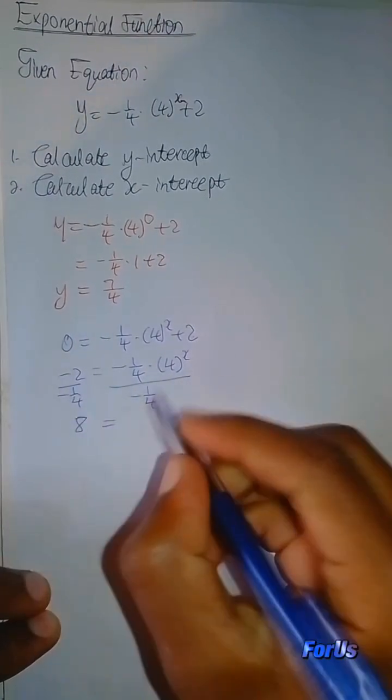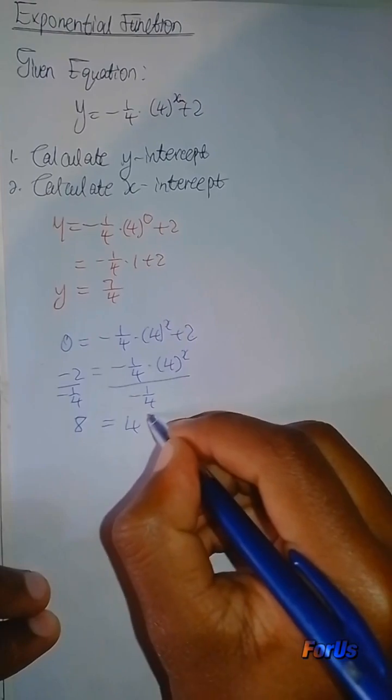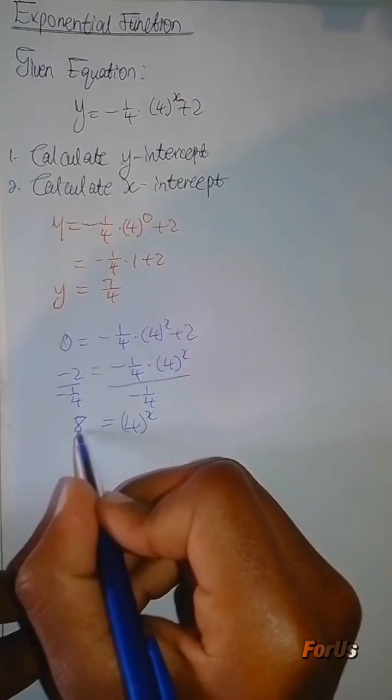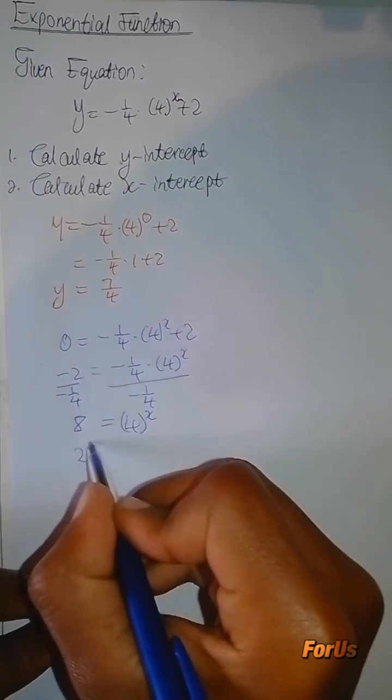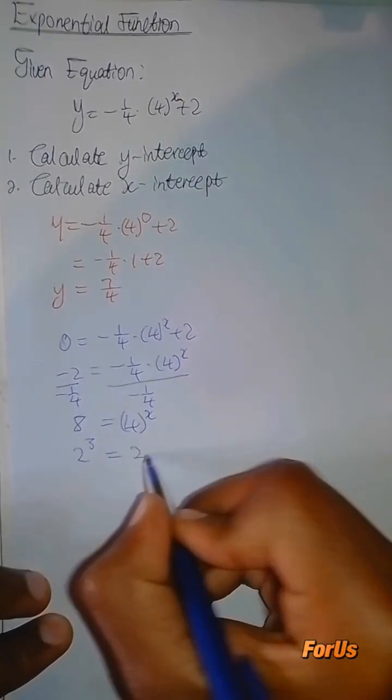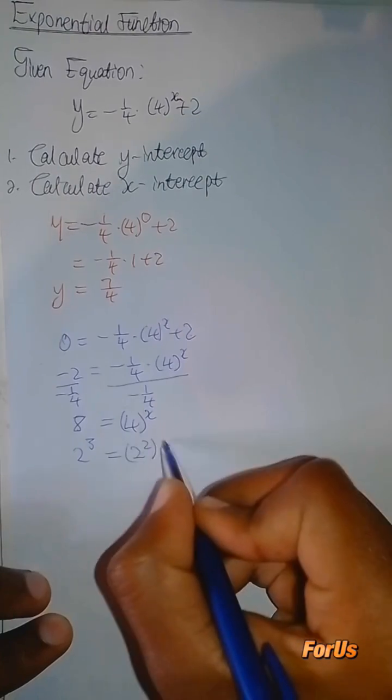Here you're going to have 8. Here you're going to have 4 to the power of x. Next, you can say 8 is the same thing as 2 to the power of 3. 4 is the same thing as 2 squared, and you're going to have x here.